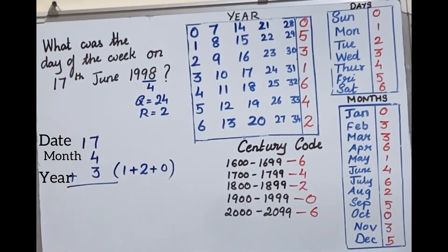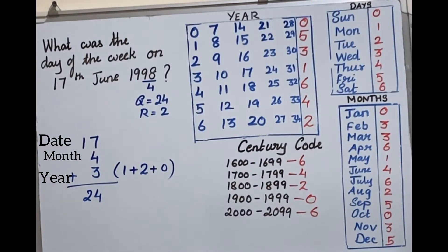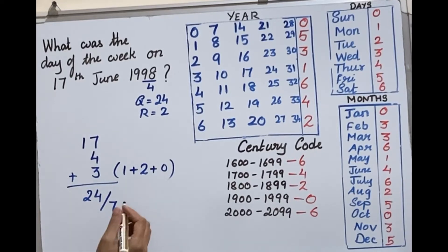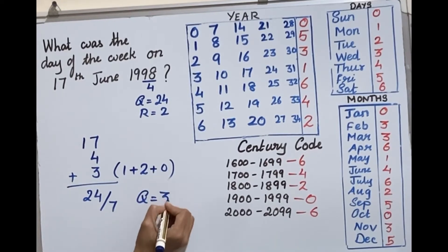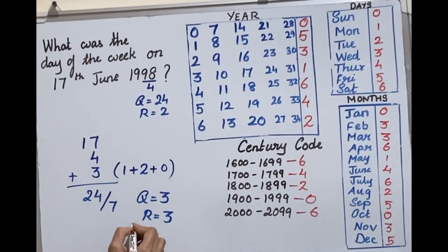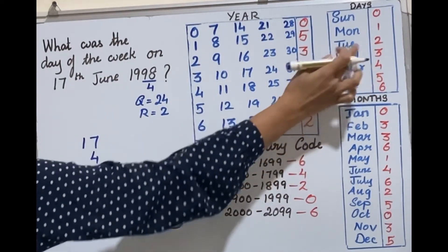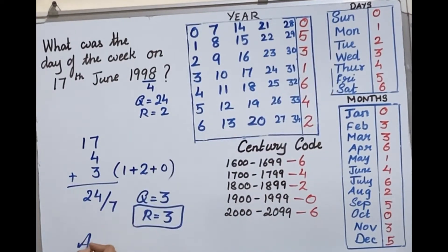So the year value is 1 + 2 + 0 = 3... wait, that gives us a year code of 3. Now add all values: date 17, month code 4, year code 3, totaling 24. Divide 24 by 7: quotient 3, remainder 3. The remainder 3 corresponds to Wednesday. So the answer is Wednesday.